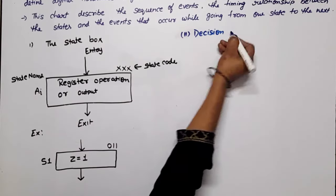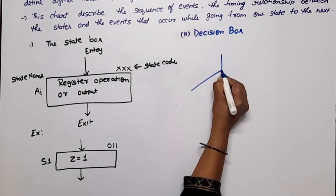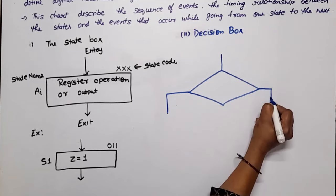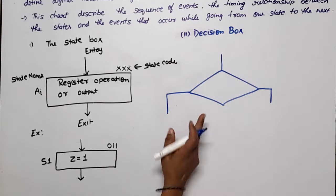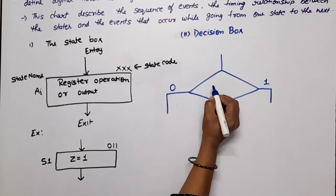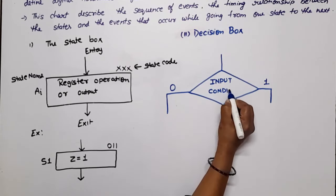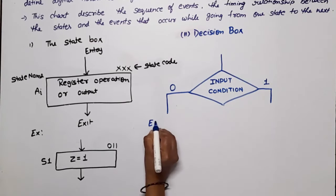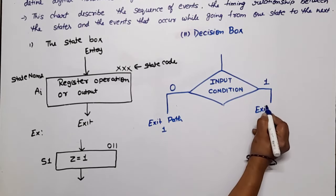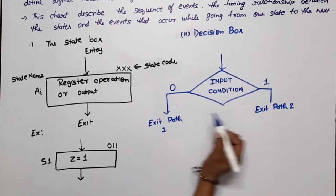The next basic element is the decision box. Its general symbol is a diamond shape. It has one entry point and two exit points — one exit when the condition is 0 and one exit for 1. Inside the decision box, we write the input condition. This is exit path 1 and this is exit path 2. The arrows show the direction of flow.